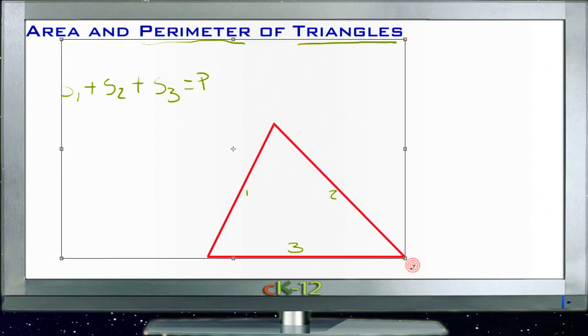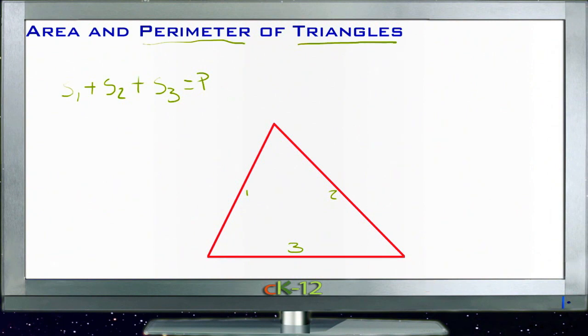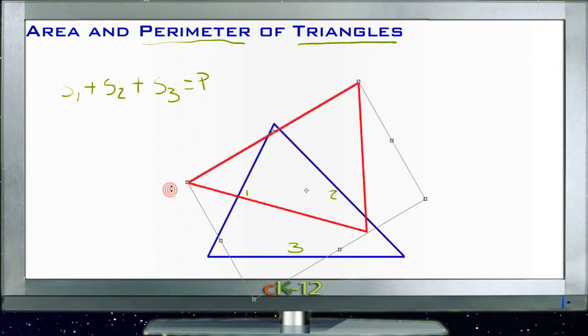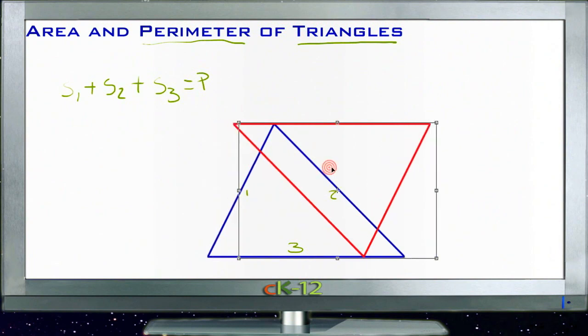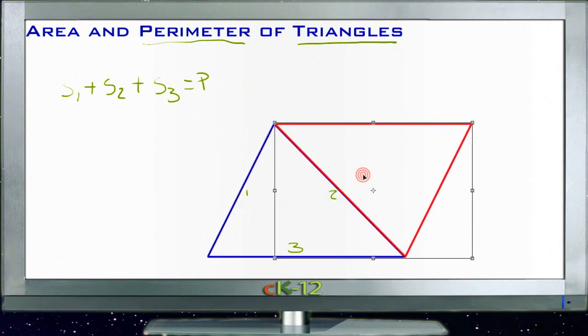and then take that duplicate and rotate it around like this and slide it over, putting it on so that one side is shared with the original triangle.